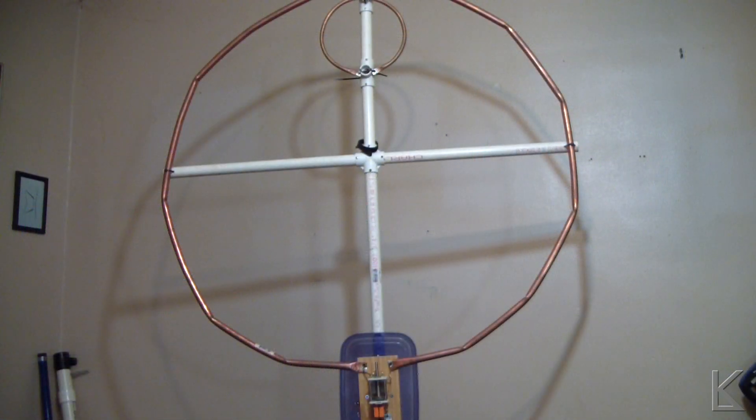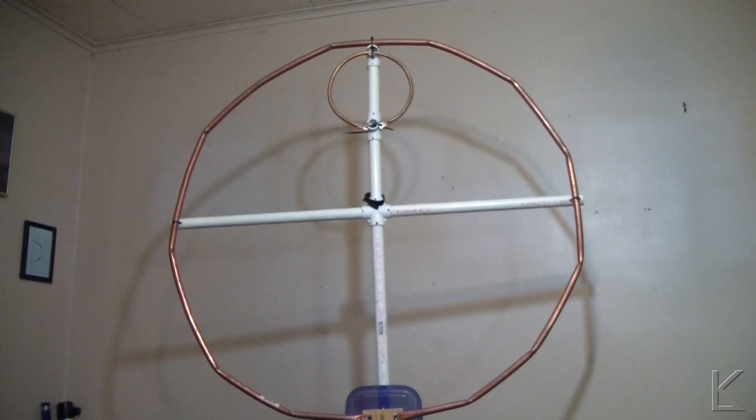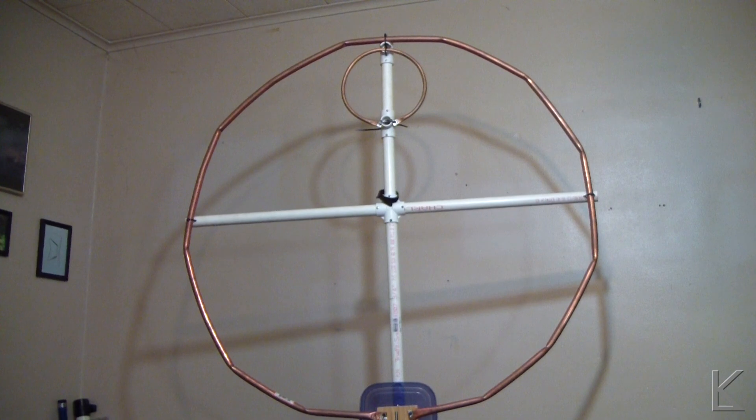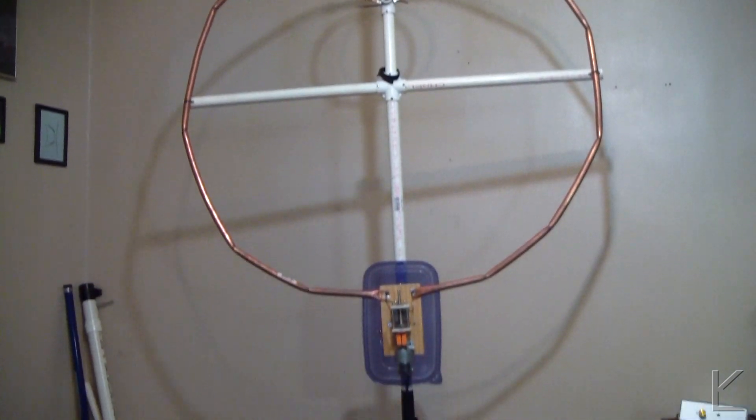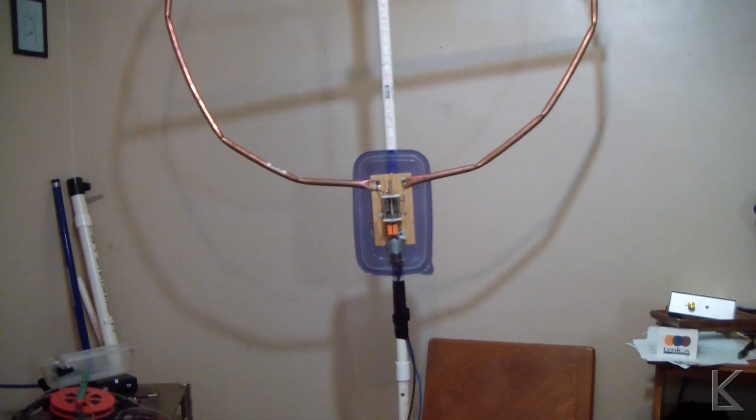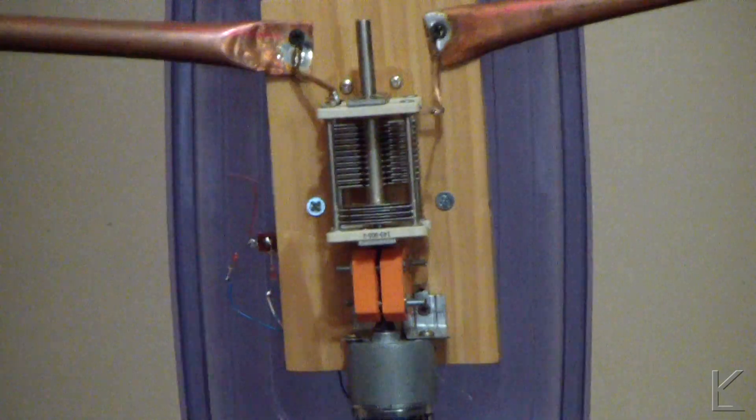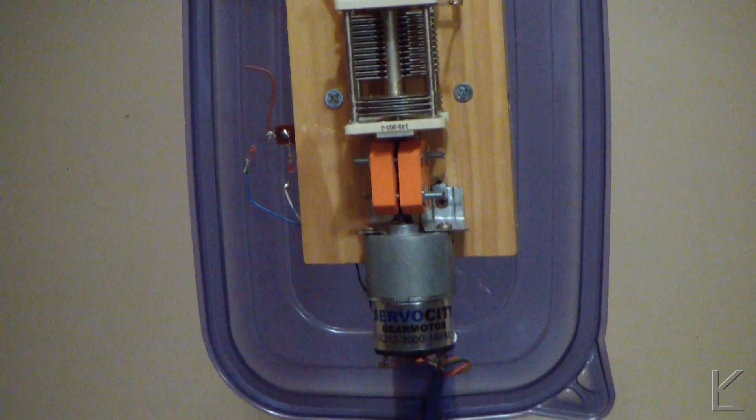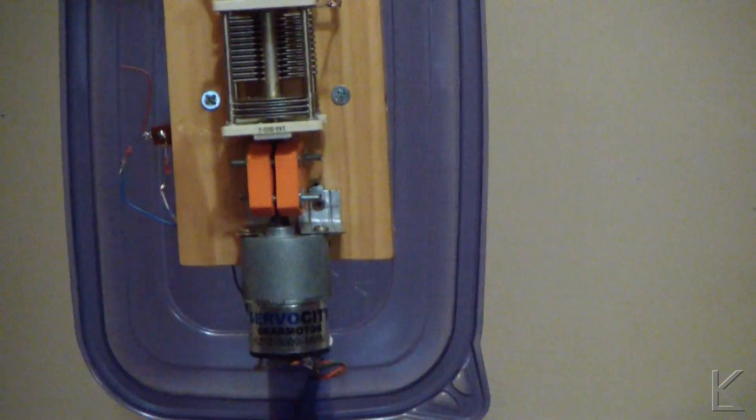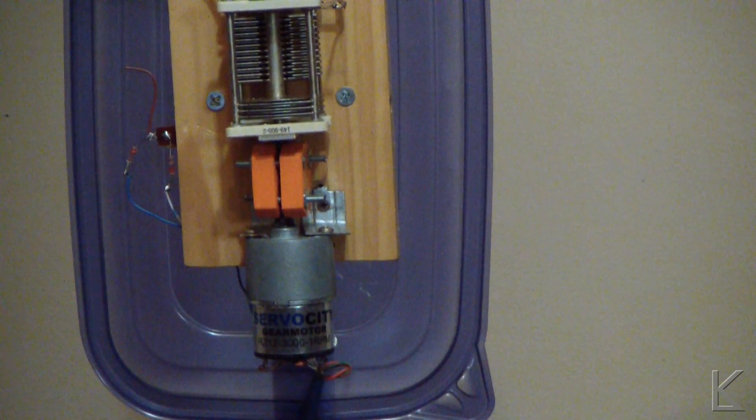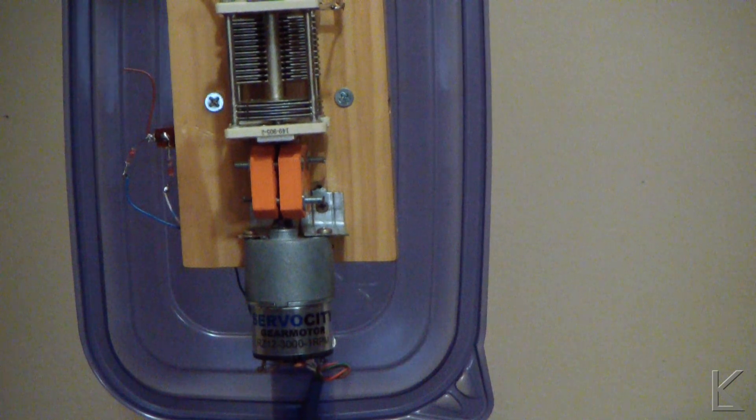This is my magnetic loop. It's a three-foot diameter loop built on a PVC framework made out of copper tubing. And this is the tuning assembly here that we'll be talking about. Now, the tuning capacitor I picked up at a HamFest or I think got from a friend maybe. It's been a while.